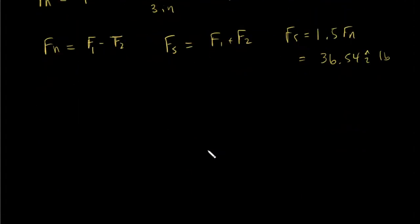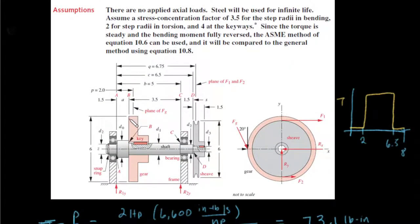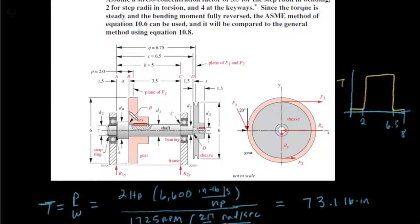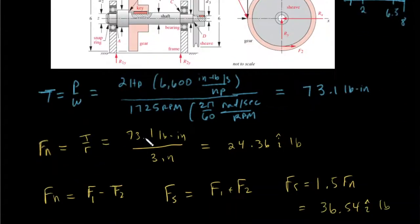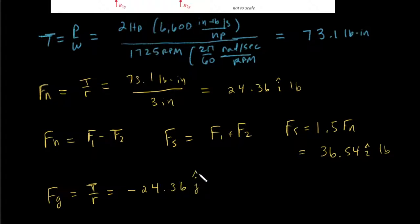The tangential force at the gear tooth interface is due to the applied torque divided by the gear radius. Even though the drawing is not to scale, the gear radius is also six inches, so we use three inches. The tangential gear force is 24.36 pounds, but it acts in the opposite direction — in the j direction — because of where the load is picked up.